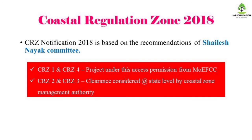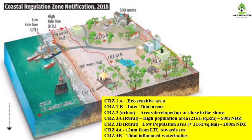Next is the Coastal Regulation Zone 2018. If you look at these islands, you will see a notification in 2018. This is the SHAILESH Committee recommendation. This is for CRZ1 and CRZ4 — the Ministry of Environment, Forests and Climate Change issued this for CRZ2 and CRZ3. If you look at CRZ1, there is an ecological sensitive area divided into two areas: 1A and 1B. That means the intertidal area — low tidal line and high tidal line.